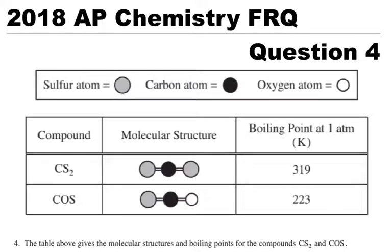I'm going to go over the 2018 AP Chemistry FRQ question number four. This is just a four-point question, so it's a little bit on the shorty side here. And it says, here is a nice picture we have of sulfur, carbon, and oxygen.